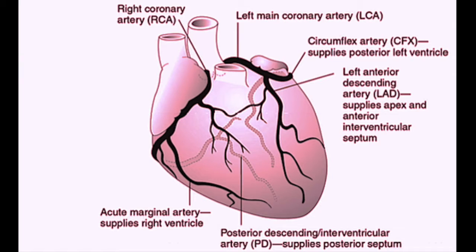If the PDA is given off by the left circumflex, that's called a left dominant system. The right coronary artery also gives off multiple acute marginal arteries. These acute marginals supply the right ventricle with blood.